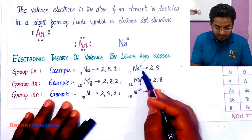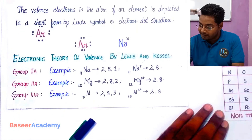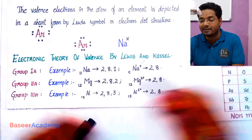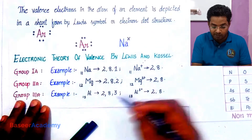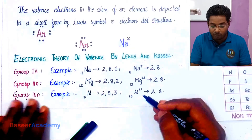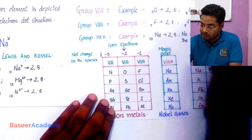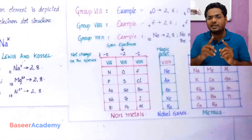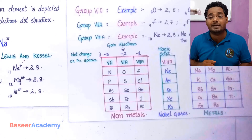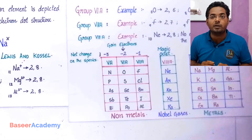Let us see why an atom becomes a positive ion when it loses an electron, and why an atom becomes a negative ion when it gains an electron. Group 1A, 2A, and 3A elements lose valence electrons and become positive ions. Group 6A and 7A elements gain electrons and become negative ions.